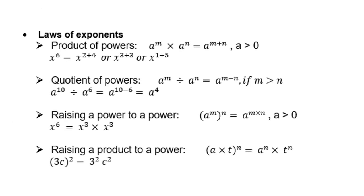Let's look at the laws of exponents. Products of powers: a to the power m times a to the power n equals a to the power m plus n, where a must be greater than 0. Example: x to the power 6 is the same as x to the power 2 plus 4, or 3 plus 3, or 1 plus 5.